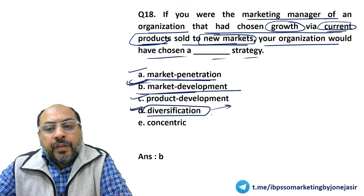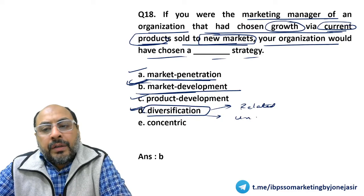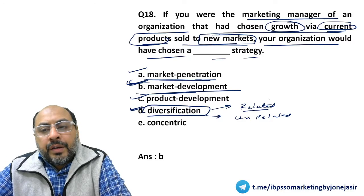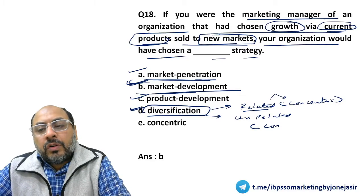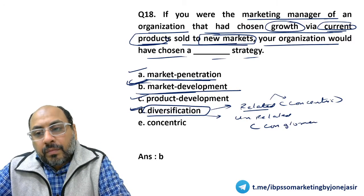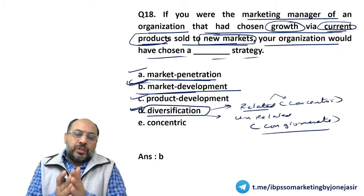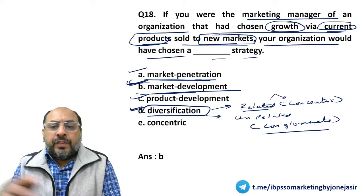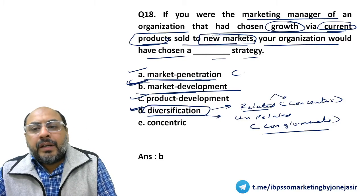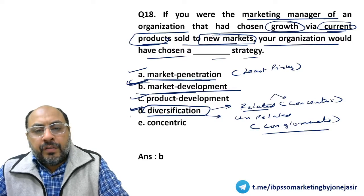The fourth option is diversification. Diversification can be of two types: related diversification, also called concentric diversification, and unrelated diversification, called conglomerate diversification. In terms of risk, market penetration is the least risky and diversification is the riskiest among the four strategies.